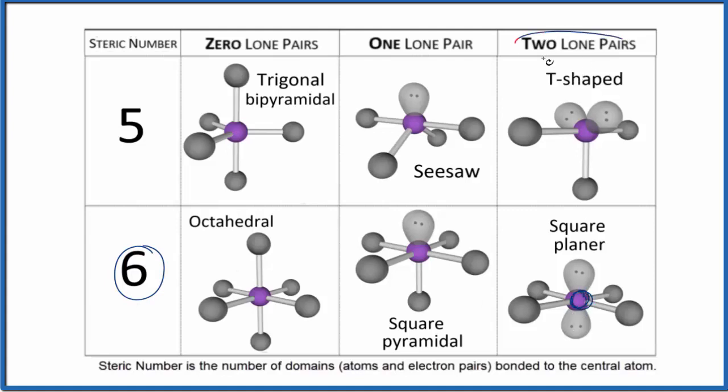Two of them are going to be lone pairs. So here's one, two lone pairs, and then one, two, three, four atoms. So six things attached to the central atom, two of them lone pairs, that's square planar.